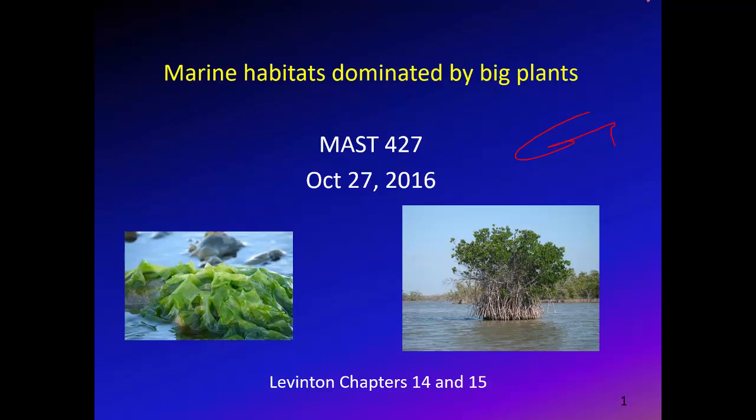Today we're going to be talking about some marine habitats that share the common feature of being dominated by rather large plants. So far in this course we've talked about habitats dominated by phytoplankton, where primary production supports organisms in the surface layer or makes its way to the benthic environment. We also talked about hydrothermal vents supported by sulfide-oxidizing bacteria — habitats where all the carbon comes from microbes.